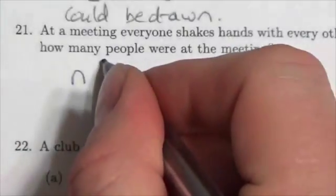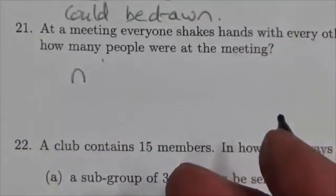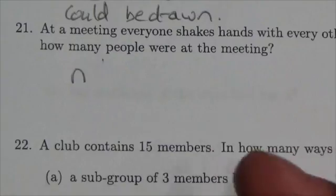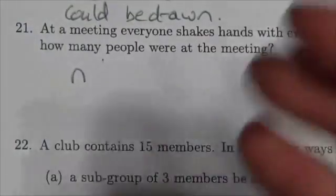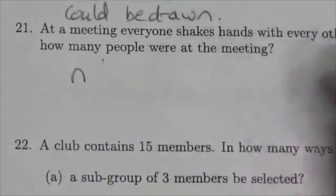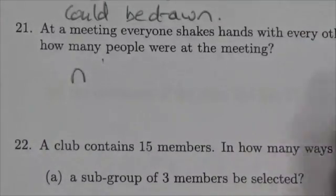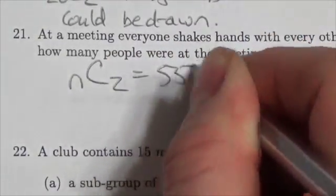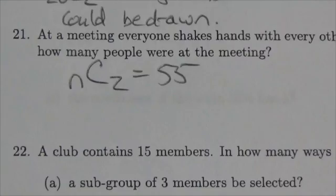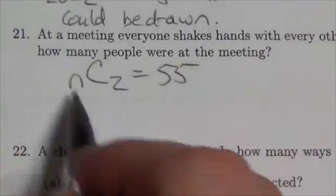But order doesn't matter. It's not like person A meeting person B is different than person B meeting person A—they're the same thing. So order is irrelevant, so I know that if I do n choose 2, I end up with 55 handshakes. Now to solve this, to figure out what n is, I can use my calculator to do this and I'll show you that in just a second.